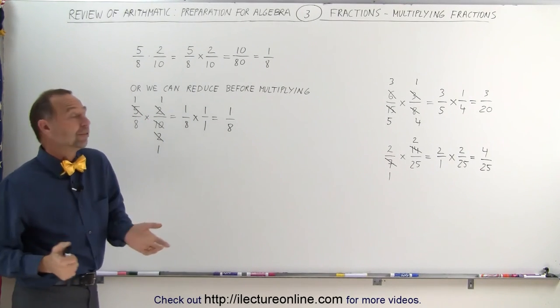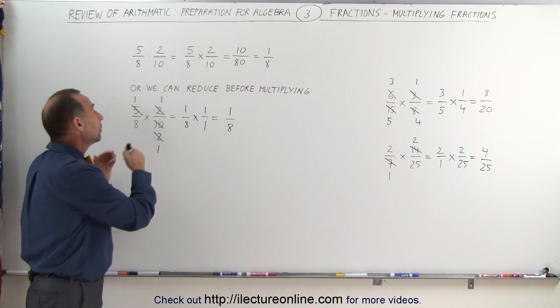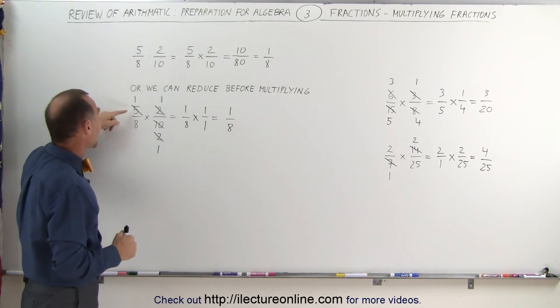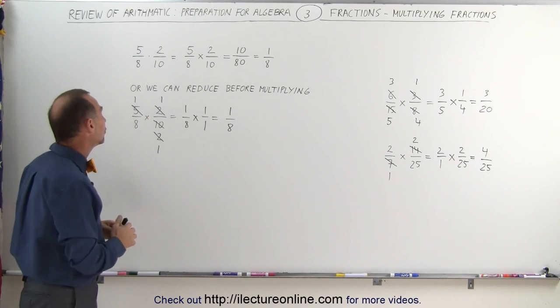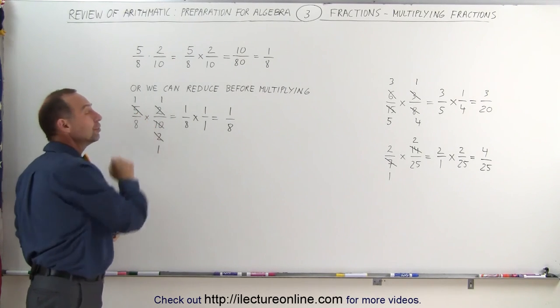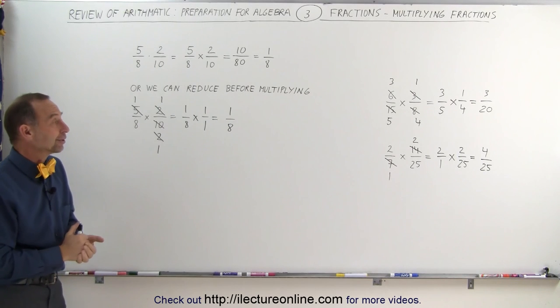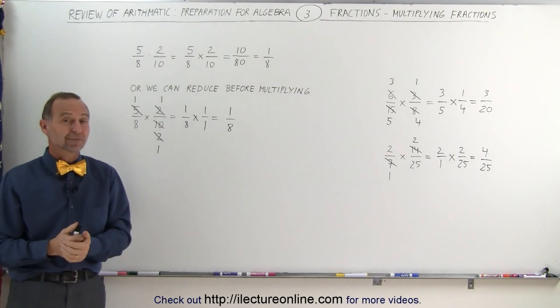Again, you don't have to reduce if you don't want to, but it's probably preferred. And you look for common factors. So here you can see that you can cross-reduce. We can reduce the 5 and the 10 even though it's the numerator of one fraction and the denominator of the other. And that's how it's done.